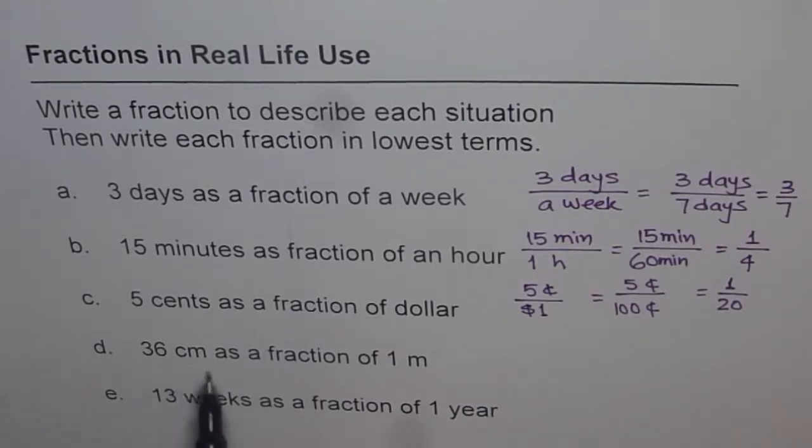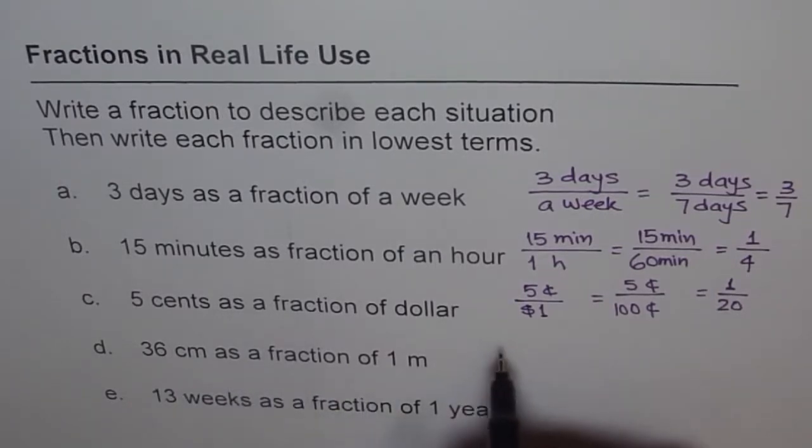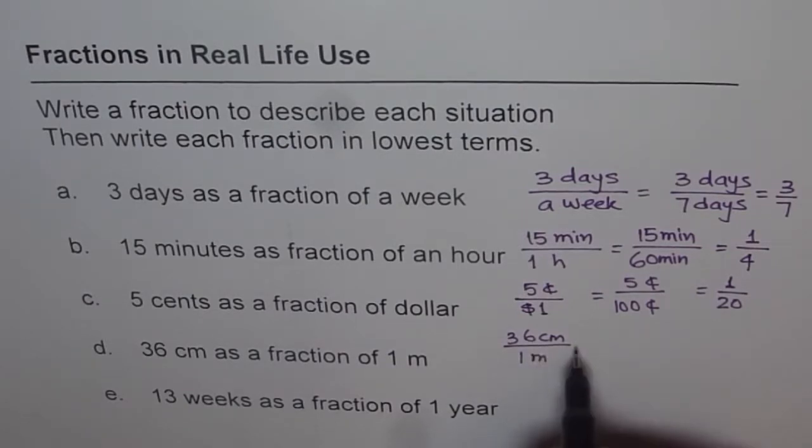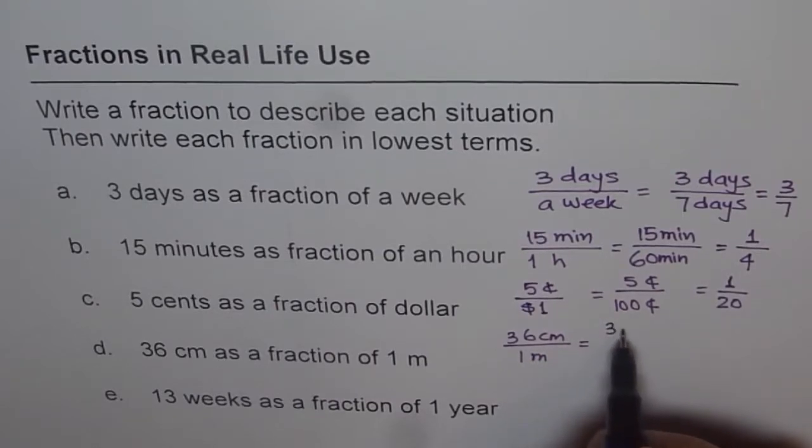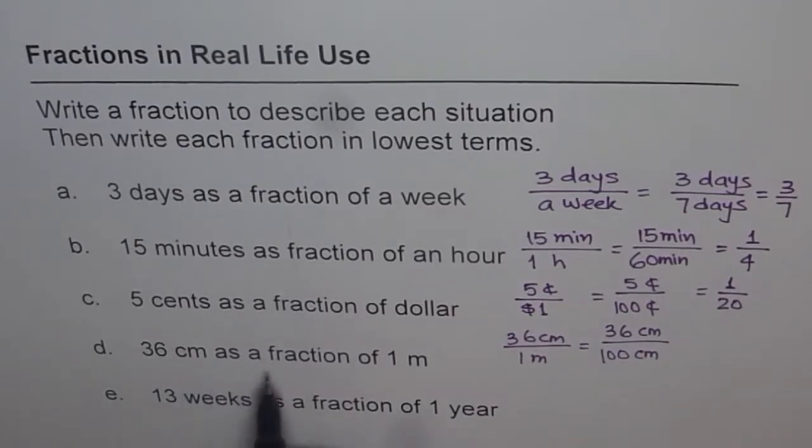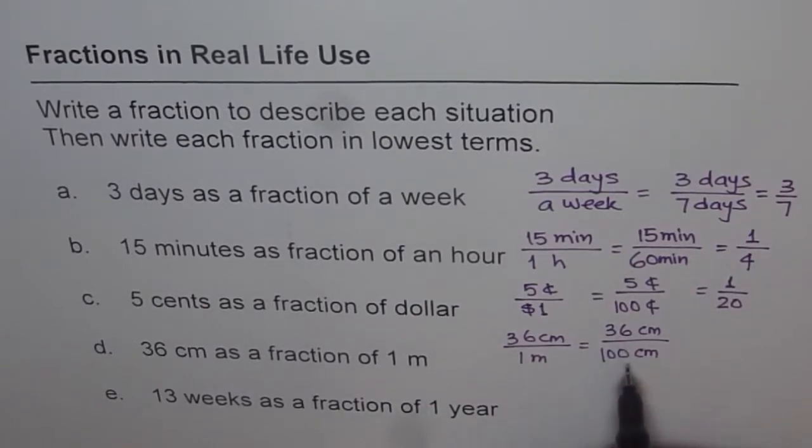Now let's look into this one. 36 centimeter as a fraction of 1 meter. 36 centimeter and 1 meter, that becomes a fraction, part of the whole. Now you can write 1 meter as 100 centimeters. So let's write that, 36 centimeter divided by 100 centimeter. This is a fraction which represents 36 centimeter as a fraction of 1 meter. Now let us find equivalent fraction in the lowest terms.